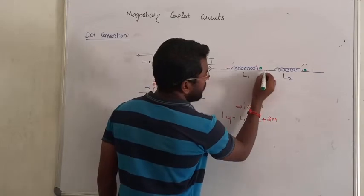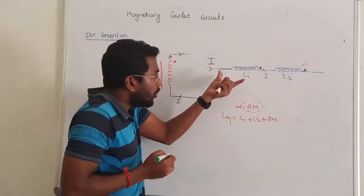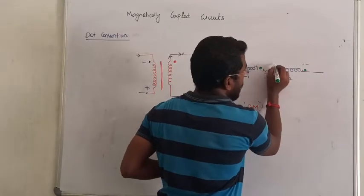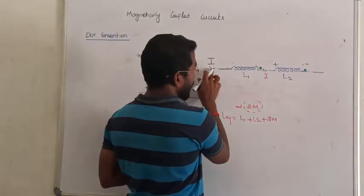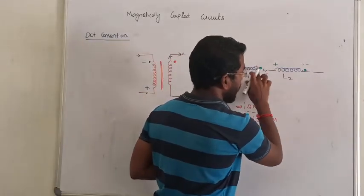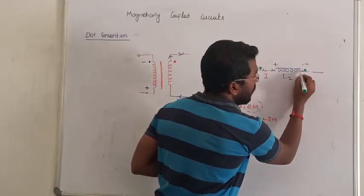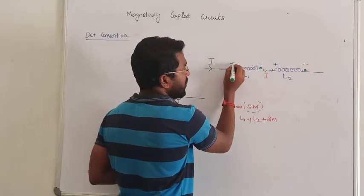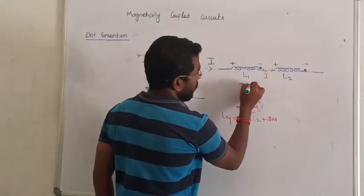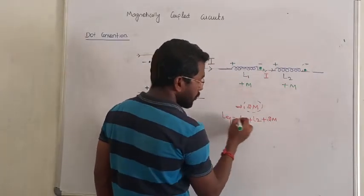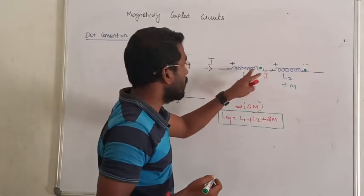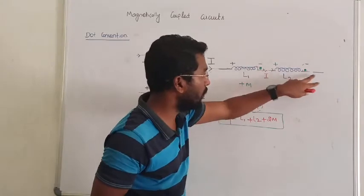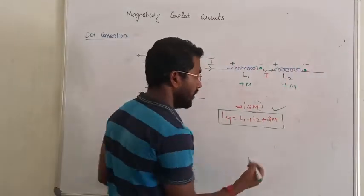Now, case number 1: current enters here, dot is here on the first coil, and dot is here on the second coil. The current enters the dot terminal on the first coil — that gives plus. On the second coil, current enters near the dot — that also gives plus. So both give plus M and plus M. The total inductance becomes L1 plus L2 plus 2M.